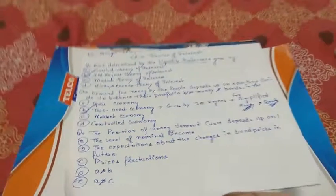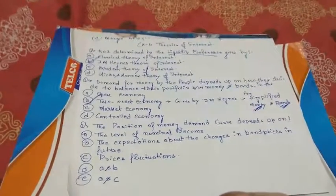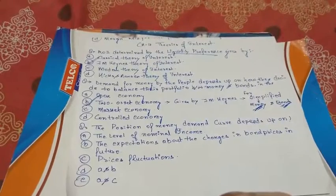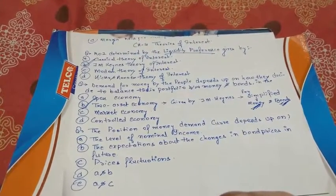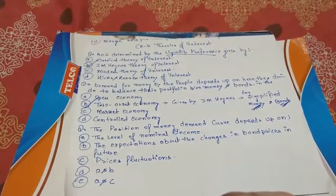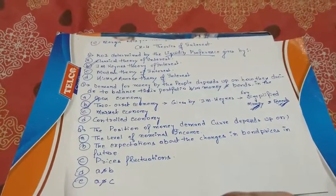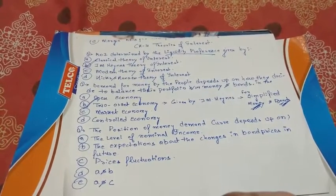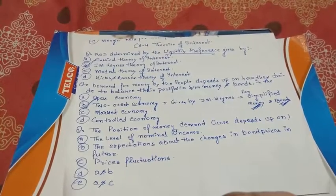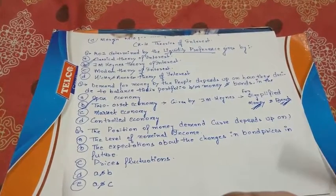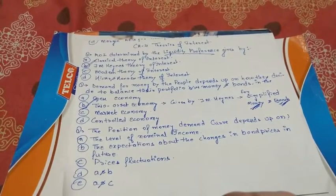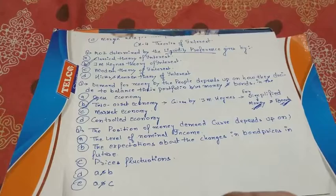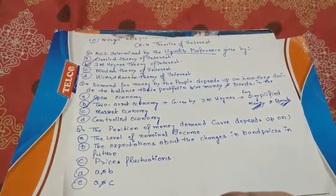Hi everyone. Today we are taking Chapter 4 of Advanced Banking Management, Module A. The topic is the Theories of Interest. We will take MCQs and with those MCQs we will understand the concepts related to the questions, so we can understand the basics of the whole topic with the help of MCQs.